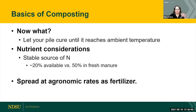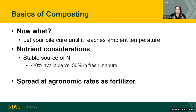Once composting is done, let your pile cure — just let it reach ambient temperature. Nutrient consideration: it's a more stable source of nitrogen, less likely to leach or run off. It's 20% available nitrogen versus 50% available in fresh manure, but it's more stable. Spread at agronomic rates — it's considered a soil amendment that can be used as a fertilizer in gardens, flower pots, tree rows, or on pastures. Make sure it's properly composted and that you're spreading at the rate you actually need.